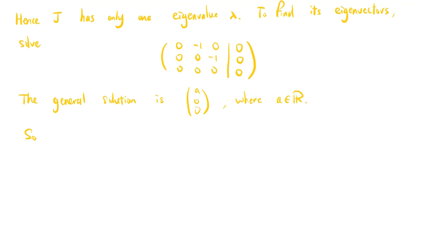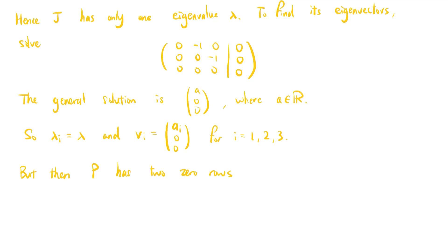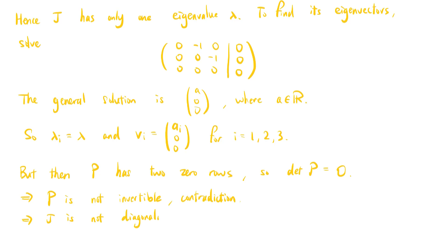So λi equals λ and vi equals (ai, 0, 0) for i equals 1, 2, and 3. But then P has two zero rows, so the determinant of P is 0. Hence P is not invertible, which is a contradiction. So this means that J is not diagonalizable.